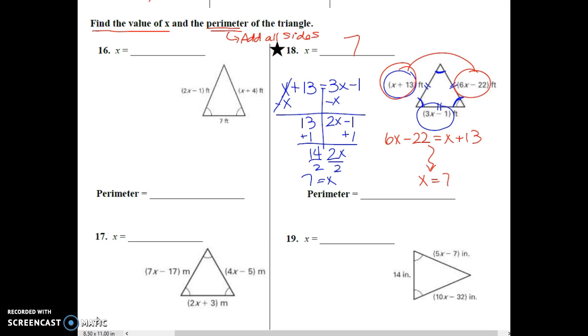Then, we have to take that 7 and plug it back in, remembering that all the sides are the same. It doesn't matter which one you plug it into. I'm going to take this 7 and plug it right there. 7 plus 13 is equal to 20. That means this side is 20 and this side is 20. My perimeter is going to be 20 plus 20 plus 20 is 60.